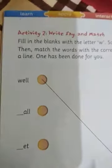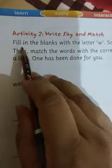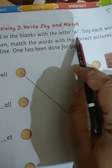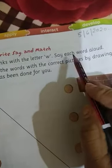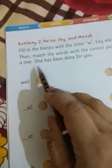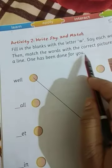Today, come to the question number 2. Fill in the blanks with letter W. Say each word aloud. Then, match the words with the correct picture by drawing a line. One has been done for you. We have to write W in these fillers and then match it with the pictures.